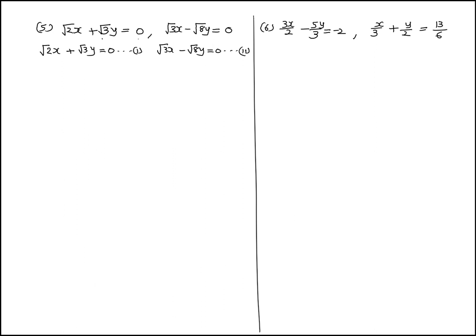We have written 2 equations. From equation 1, root 2 x plus root 3 y equal to 0. We isolate x: root 2 x equal to minus root 3 y, so x equal to minus root 3 y upon root 2. This is equation number 3.